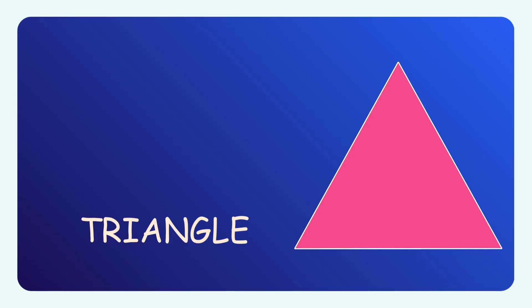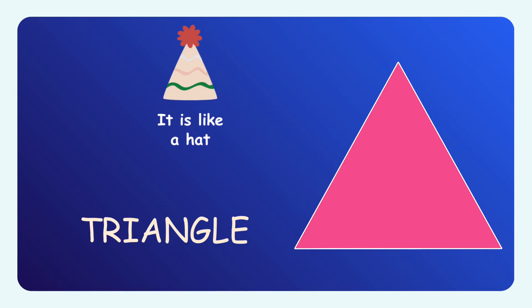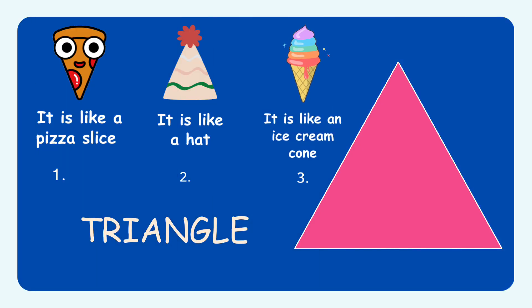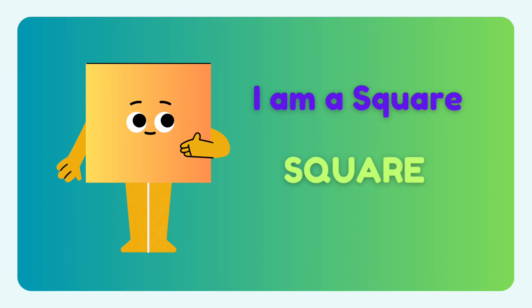You can find me anywhere around your surroundings, like a pizza slice, like a hat, and like an ice cream cone as well. All these objects can be seen in the shape of a triangle. I am a square.